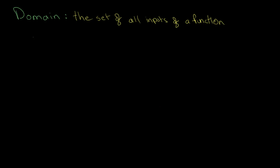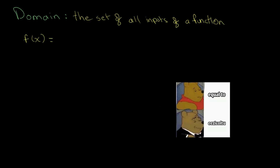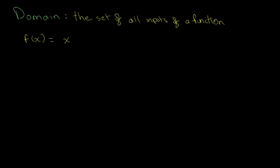The domain of a function isn't always directly forced upon it by mathematical laws. We can look at the basic example of f(x) equals x, which should technically be defined over every single value. But sometimes the domain can be artificially imposed — for example, we can say the input is only defined when x is greater than 0 and less than or equal to 5.